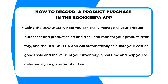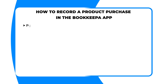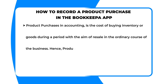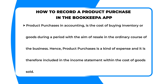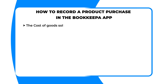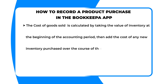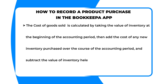The app will help you determine your gross profit or loss. Product purchase in accounting is the cost of buying inventory or goods during a period with the aim of resale in the ordinary course of business. Product purchase is a kind of expense and is therefore included in the income statement within the cost of goods sold. The cost of goods sold is calculated by taking the value of inventory at the beginning of the accounting period, then adding the cost of any new inventory purchased over the course of the accounting period.